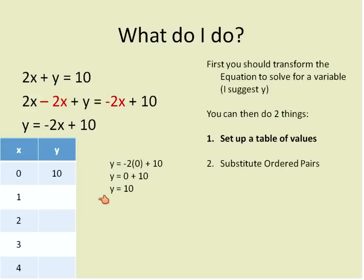Now I'm going to go back and I'm going to change it. When x is equal to 1, what is y equal to? When x equals 1, I just go back to my original equation, plug in 1 for my x value and solve. Negative 2 times 1 is negative 2 plus 10 gives me positive 8. When x is 1, y is 8. And I'll keep going.